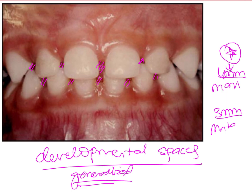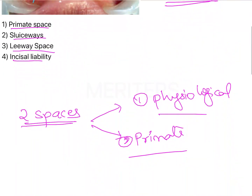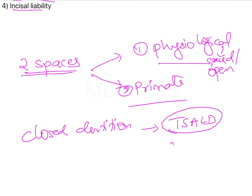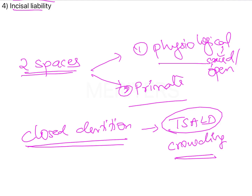Whenever there is generalized spacing present like this, Bohm has classified this type of dentition as spaced dentition — also called open dentition. If there is no spacing present, then it is called a closed dentition or unspaced dentition. When there is a closed dentition, this tells us there is a likelihood of tooth size arch length discrepancy in the permanent dentition, which could lead to crowding within the arches. So when you see a closed dentition in the deciduous teeth, it is something you need to keep an eye out for.